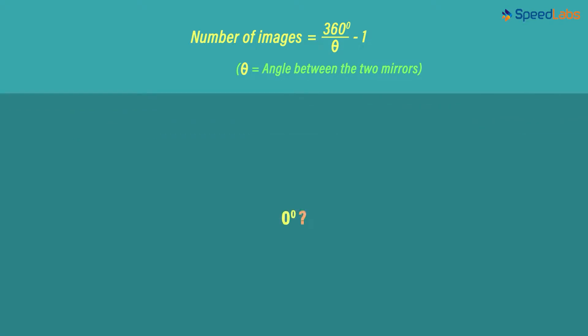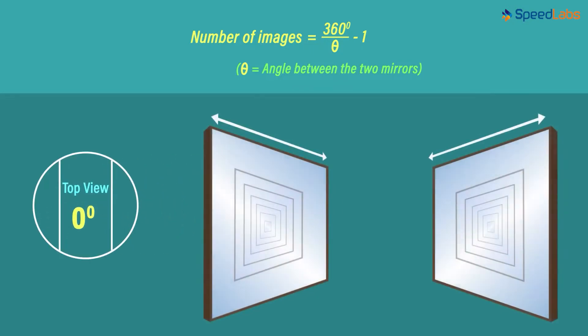What if the angle between the mirrors is 0 degrees? Well, that's the same as mirrors kept in parallel. We get infinite number of images. Note that you can't use the formula in this case. Because if you put 0 in the denominator, the term will be undefined. Hence, we can't use the formula when theta equals 0.